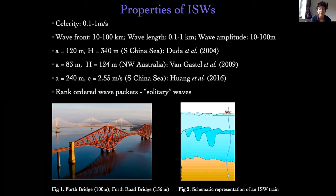These waves tend to travel as rank-ordered wave packets — they self-organize so the leading wave has the biggest amplitude, the second wave has the second largest, and so on. That's because the bigger the amplitude, the faster they travel, so the biggest one is always at the front. We observe them in these packets, but if we could let this go for an infinite amount of time, the front wave would just get away from the one behind it, and so on.